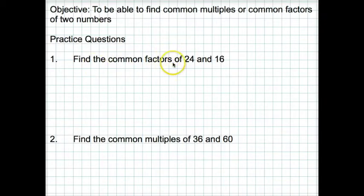First one then, to find the common factors of 24 and 16. Well, a factor is a number that will go directly into another number without any remainders, so it's divisible exactly. So what we need to do is write down the factors of both these numbers.